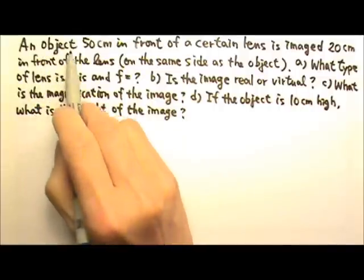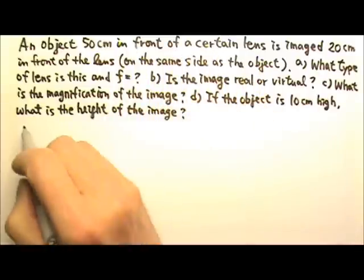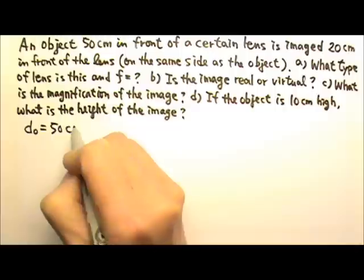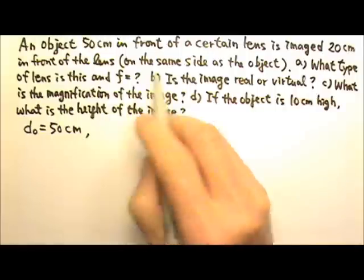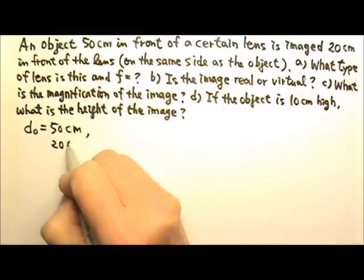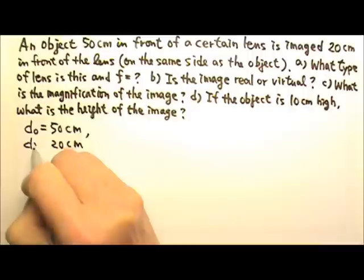The object is 50 cm in front of the lens, so 50 cm is the object distance, DO. The image is formed 20 cm away, so the DI is 20 cm.